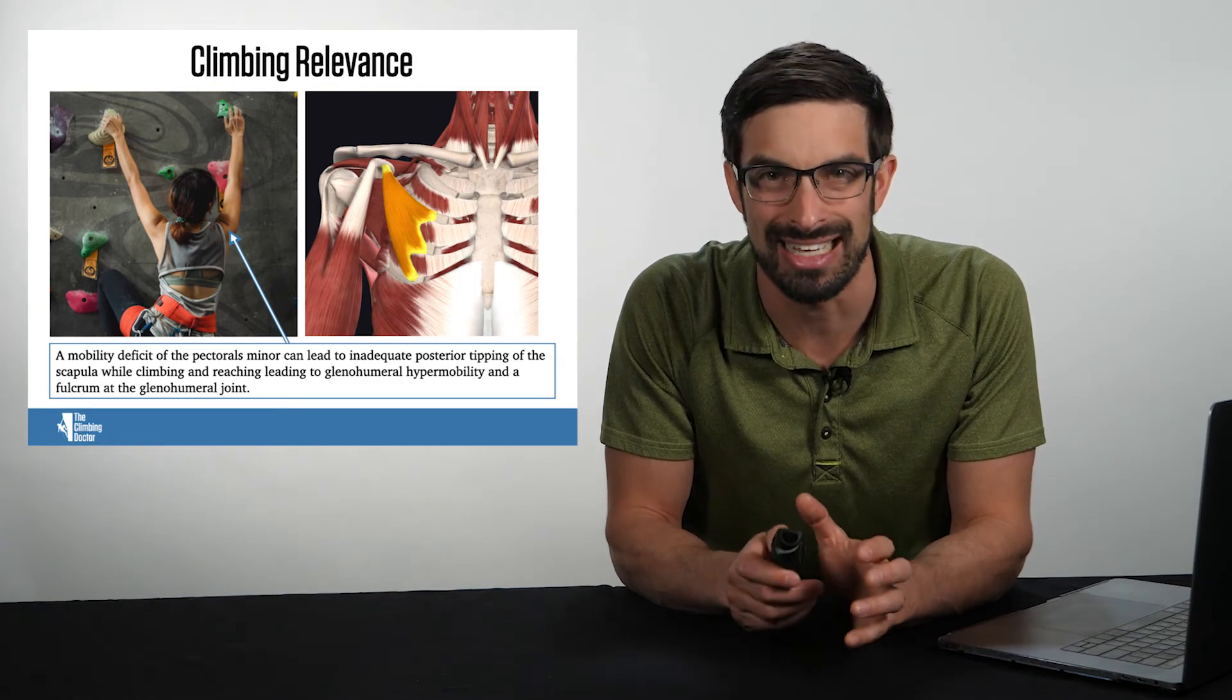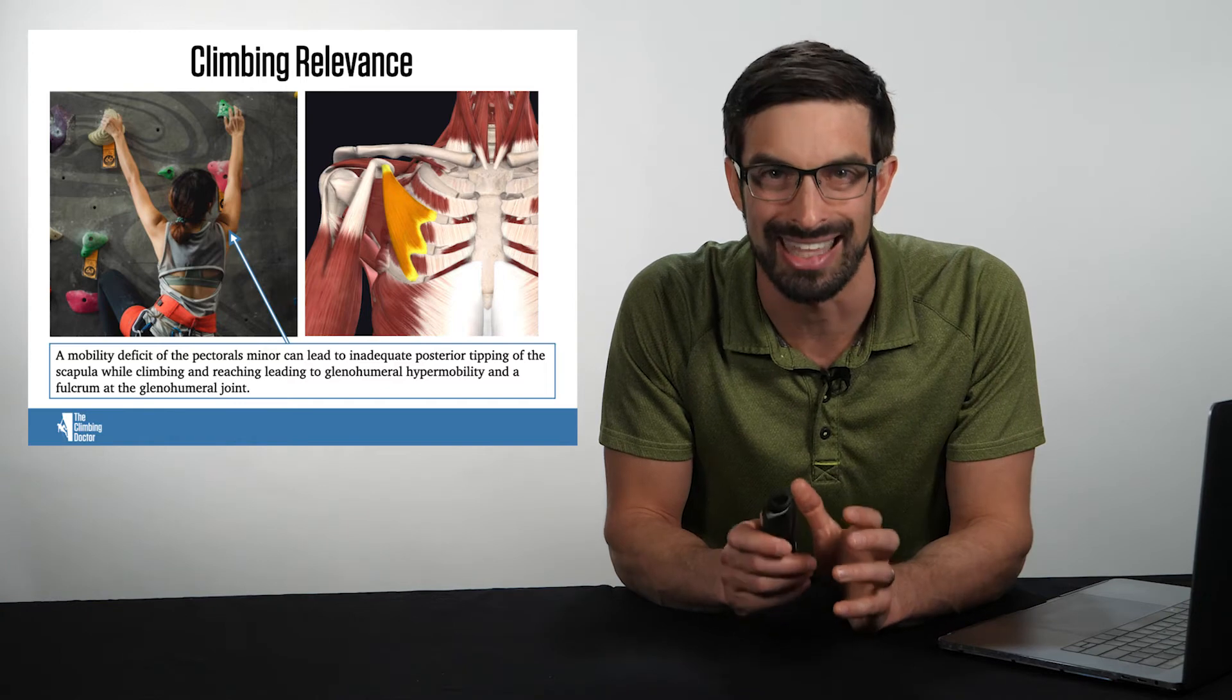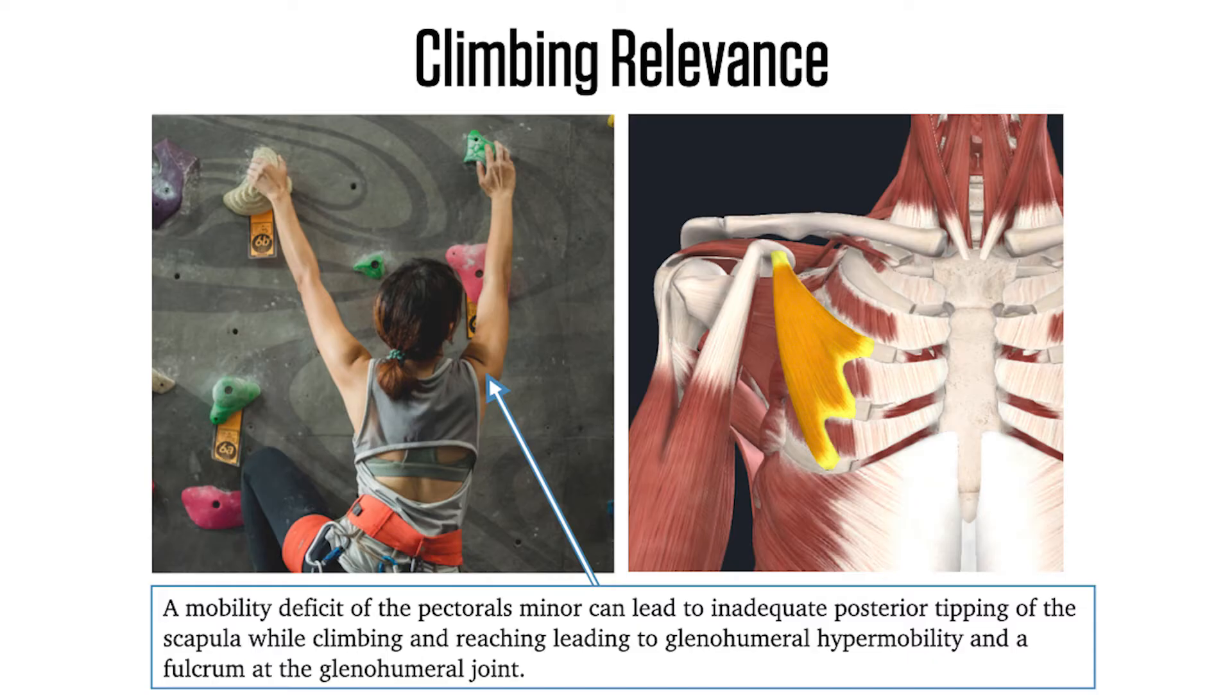This can then lead to excessive glenohumeral hypermobility and a fulcrum at the glenohumeral joint. As you can see on this image on the left, a stiff pec minor can cause decreased posterior tipping of the scapula, which then means the glenohumeral joint has to excessively flex. With excessive flexion of the glenohumeral joint, you'll notice asymmetric creases in the posterior aspect of the glenohumeral joint, and you can compare these side to side.